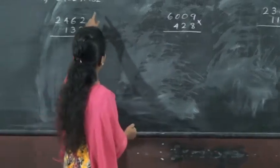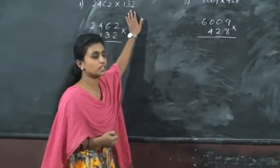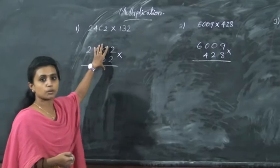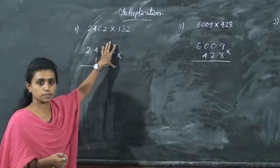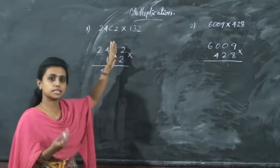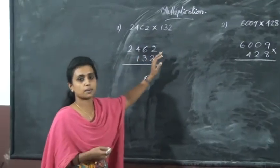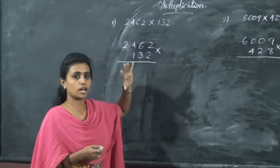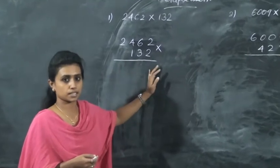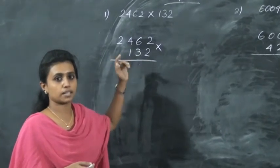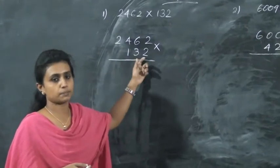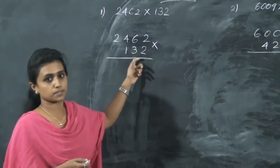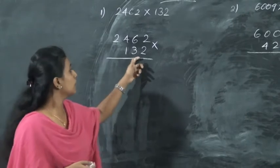Here comes multiplication. Multiplication of large numbers is the same as multiplication of small numbers — you multiply in the same manner. Okay, large numbers work the same way.